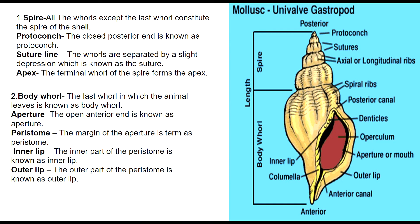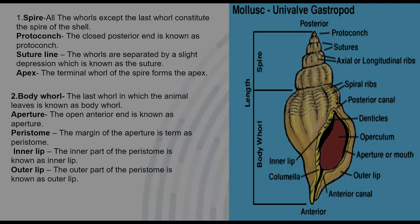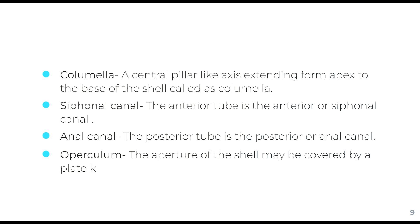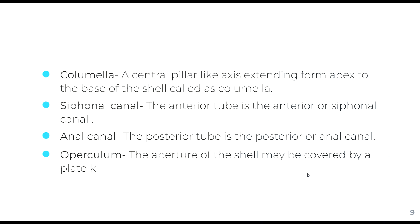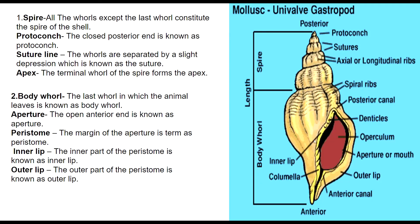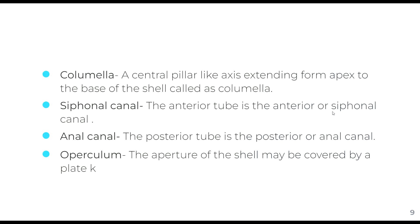There are two types of canal: anterior canal and posterior canal. The siphonal canal, which is also known as the anterior canal — here we can see this is the siphonal canal. Then there is the anal canal, which lies on the posterior side, and this canal is known as the anal canal. Then there is a columella present. The columella is a central pillar-like structure extending from the apex to the base of the shell.